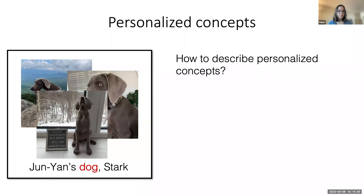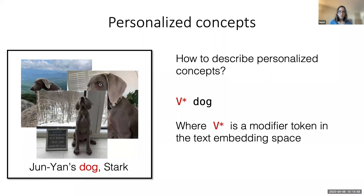With this updated method of adding the regularization images, we see that the model has learned the Moongate concept and still preserves the related concepts of moon. Let's go back to some of the personalized concepts. Another thing we need to decide when it comes to personalized concepts is how to describe this specific instance of a general category like dog. We probably don't want to fine-tune the model with the text caption 'photo of a dog,' as that would change all dog images in the model. So we add a modified token in front of the category word — in the case of a pet dog, the target concept is described as V* dog; in the case of cat, it will be V* cat, or V* toy, etc.